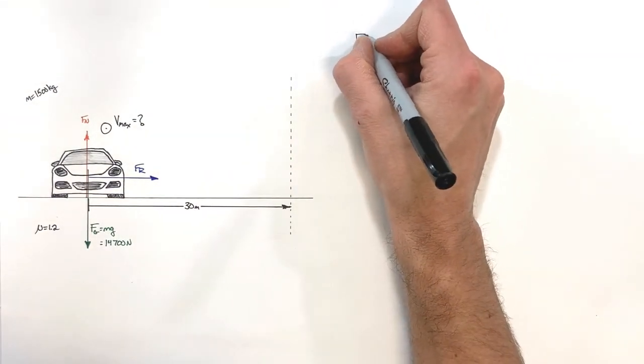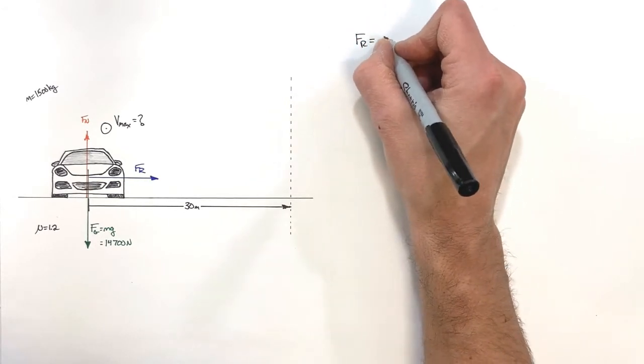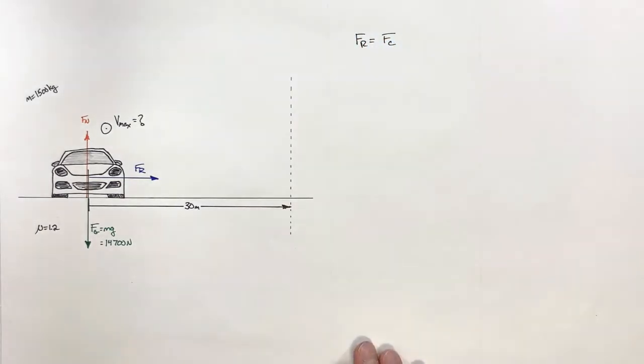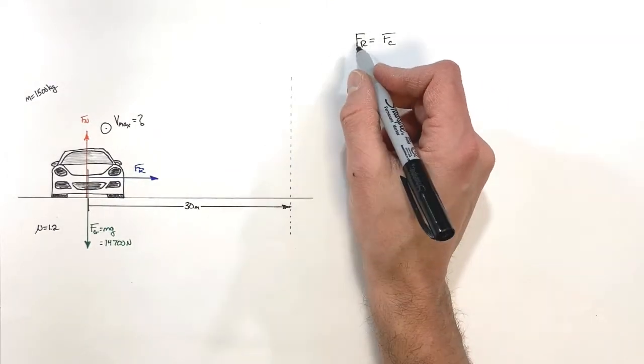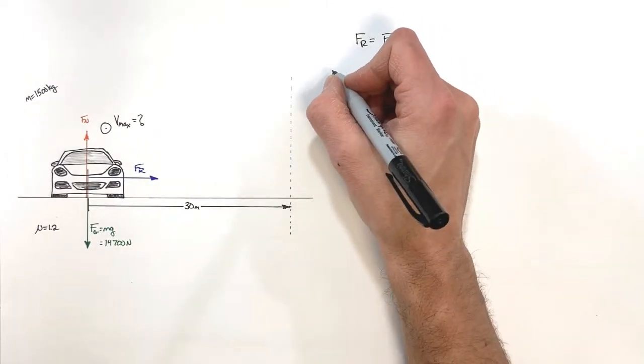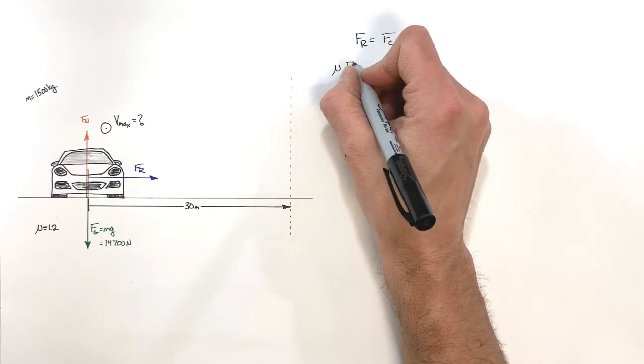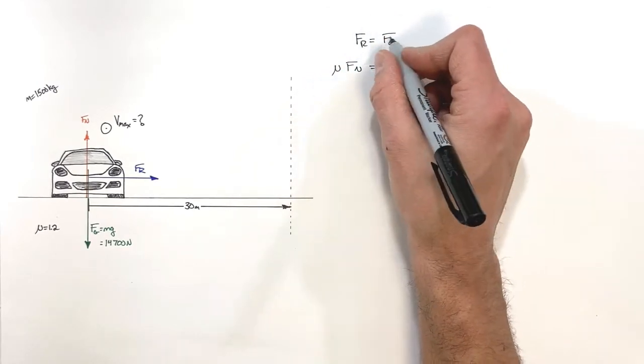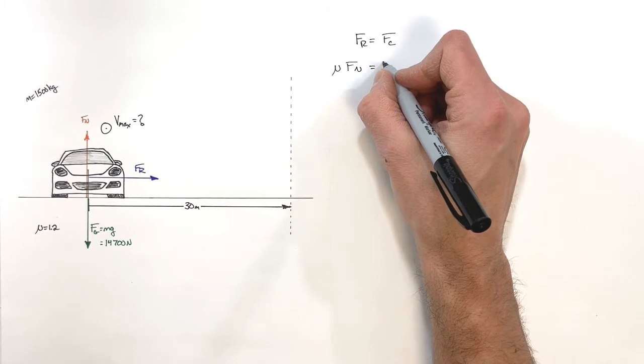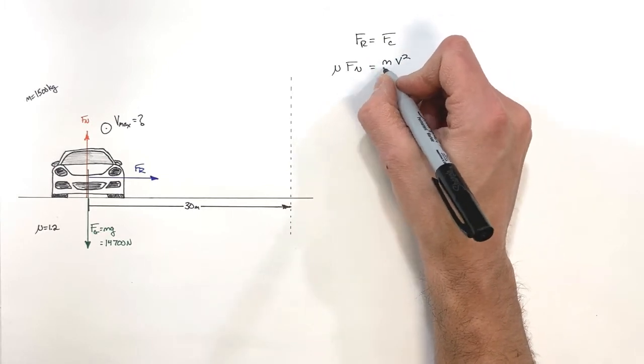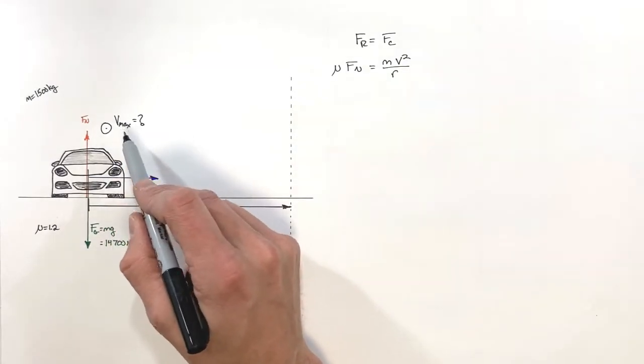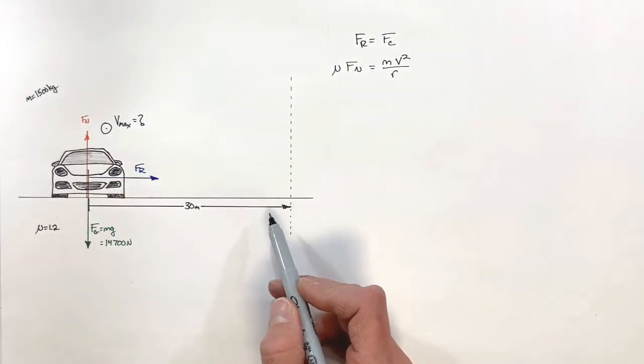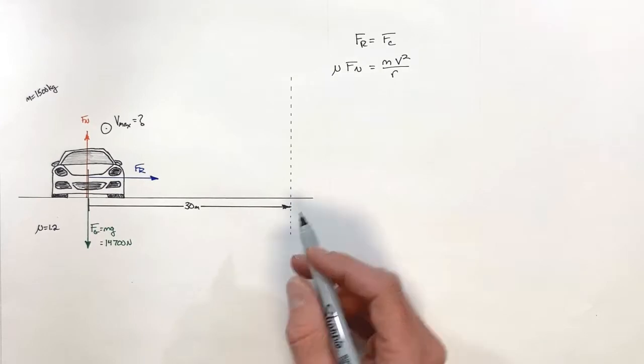So we're going to set the friction force equal to the centripetal force. And to solve for velocity, all we're going to do is expand out these two terms. We know that friction is equal to μ times the normal force, and we know the centripetal force is m v squared over r, where m is the mass of the car, v is the velocity of the car, and r is the radius of the circle—in this case, the radius of the corner.